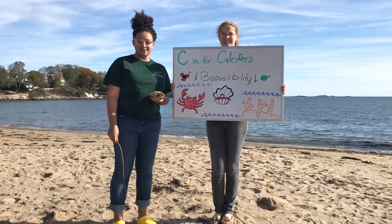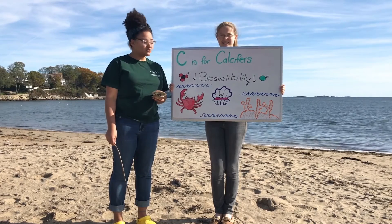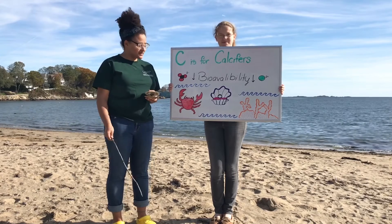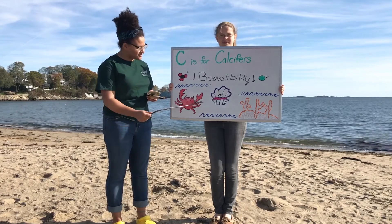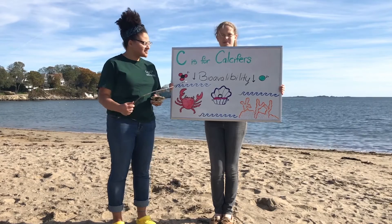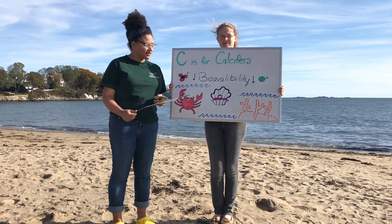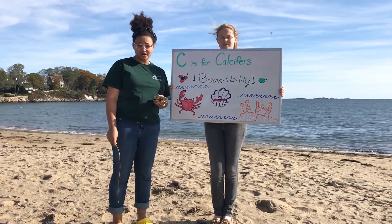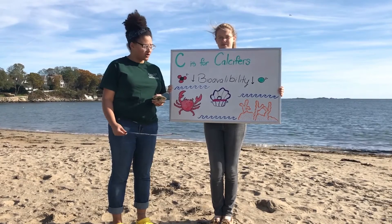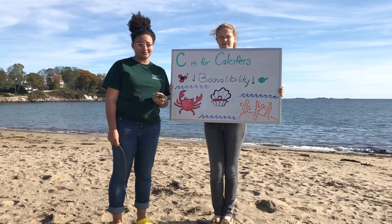C is for calcifiers — the name we give to organisms that use calcium carbonate from the ocean to make their shells. This includes things like crabs, oysters, coral, and many others. However, as the bioavailability of calcium carbonate goes down, calcifiers have a hard time forming their shells. They either turn out way too weak for protection, or they take so much energy to make that they end up having shorter lifespans.